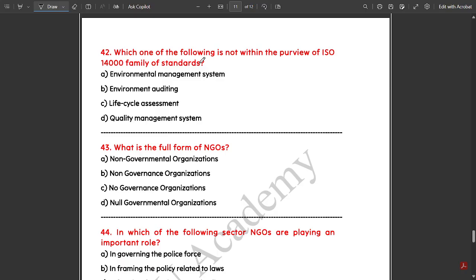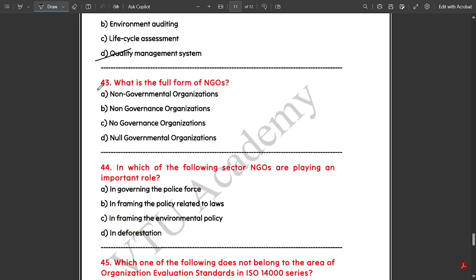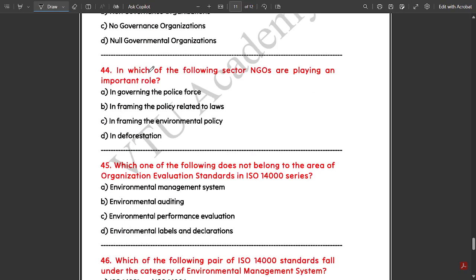Which one of the following is not within the purview of ISO 14000 family of standards? Quality management system. What is the full form of NGOs? Non-governmental organizations. In which sector are NGOs playing an important role? NGOs are playing an important role in framing environmental policy sectors.